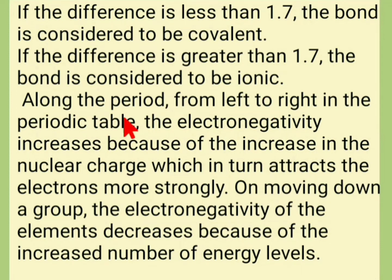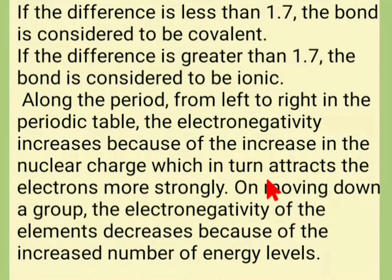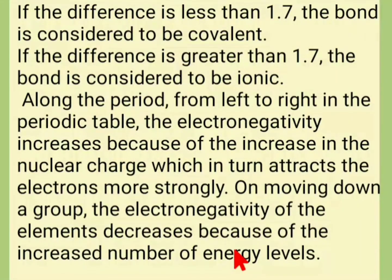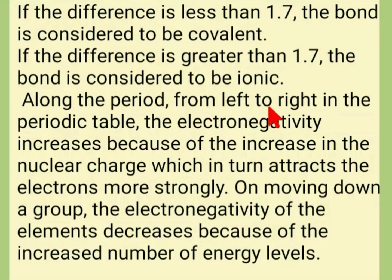Along the period from left to right, electronegativity increases because of the increase in nuclear charge, which attracts electrons more strongly. Moving down the group, electronegativity decreases because of the increased number of energy levels. So along the period, electronegativity increases, and moving down the group, it decreases.